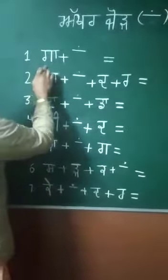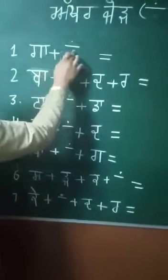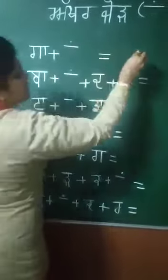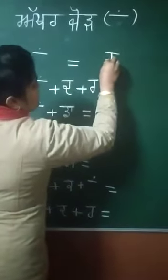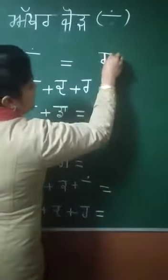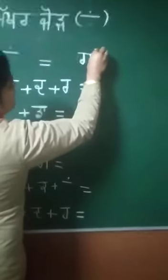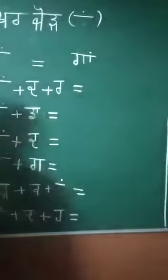First, gagga. Gaggeru kanna plus bindi matra. How to write? First, gagga — gaggeru kanna upar bindi ga.